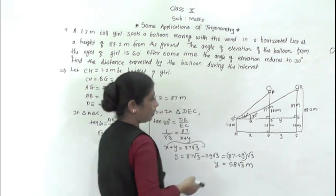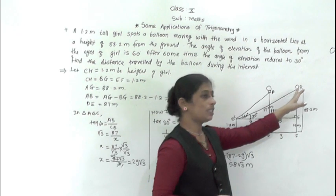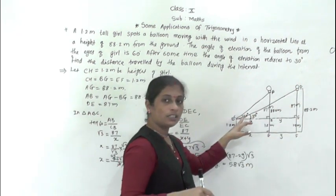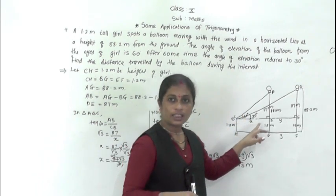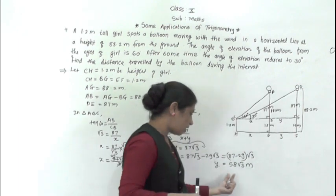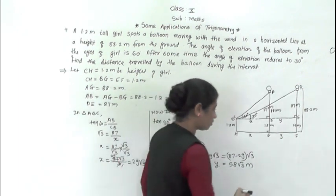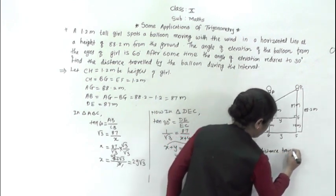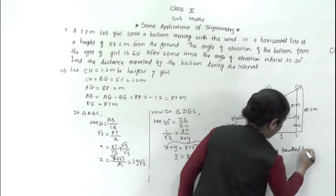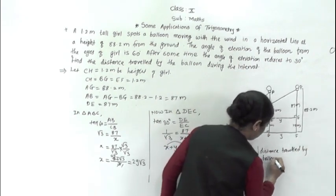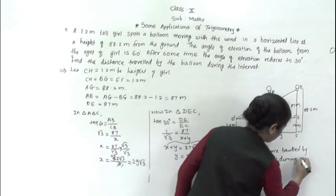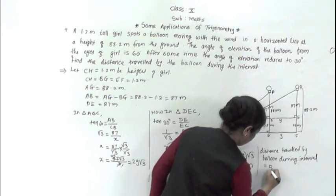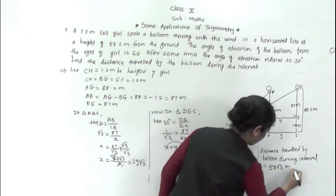So the distance traveled by the balloon during this interval equals 58 root 3 meters. Now we will see the next example.